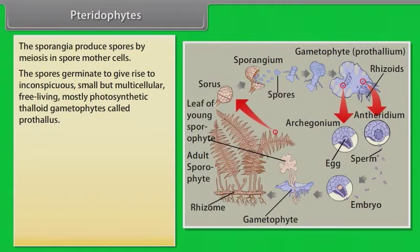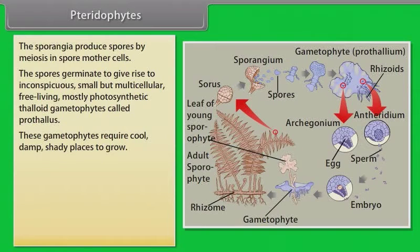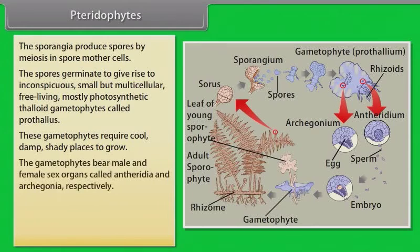The sporangia produce spores by meiosis in spore mother cells. The spores germinate to give rise to inconspicuous, small but multicellular, free-living, mostly photosynthetic, thalloid gametophytes called prothallus. These gametophytes require cool, damp, shady places to grow. The gametophytes bear male and female sex organs called antheridia and archegonia respectively.